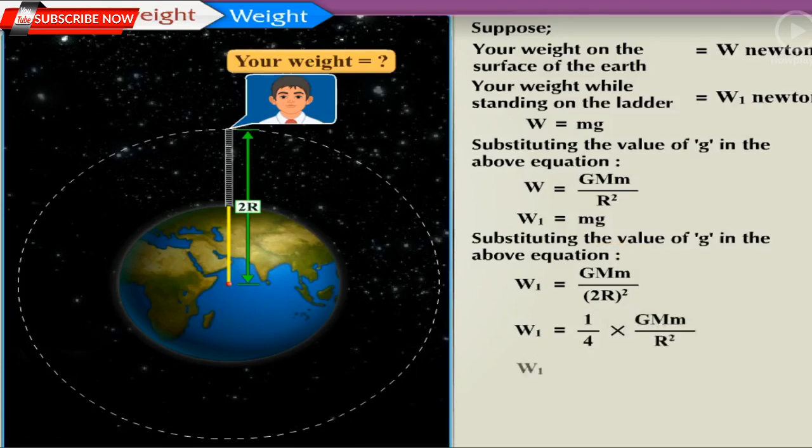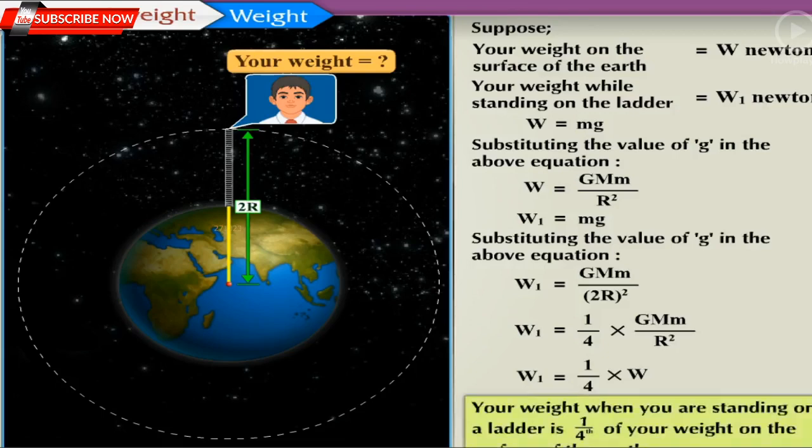Therefore, W1 is equal to 1 upon 4 into W. This means that your weight when you are standing on a ladder is one-fourth of your weight on the surface of the Earth.